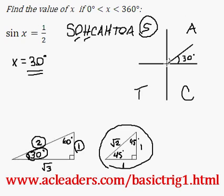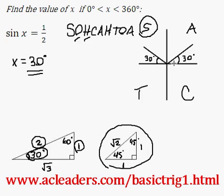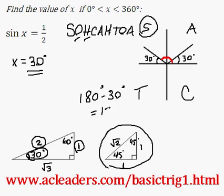So if we draw a terminal arm right here that has this reference angle measuring 30 degrees, then we are also going to get sine equals one half. The reference angle is 30 degrees, but the terminal arm is in the second quadrant, and the standard position angle is the second answer. How can we calculate that? 180 is the whole straight angle, and since the reference angle is just 30 degrees, we can go 180 minus 30, giving us the second answer: 150 degrees.